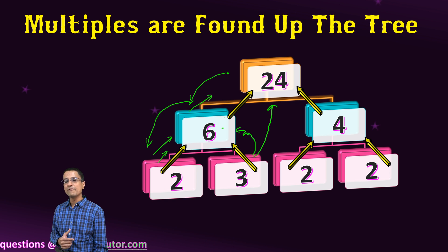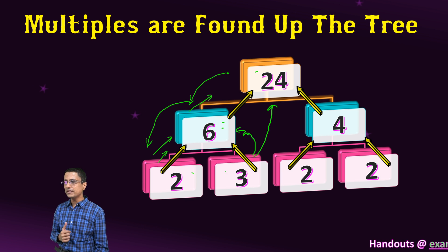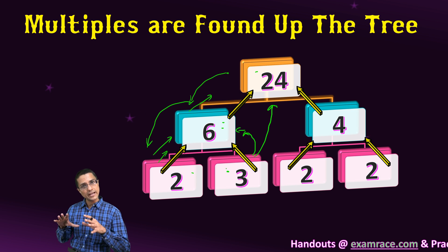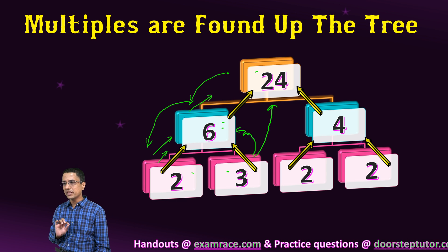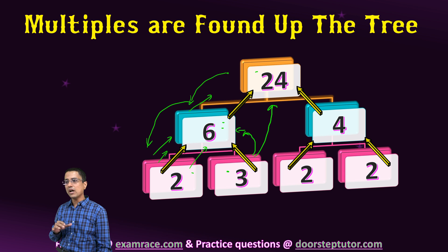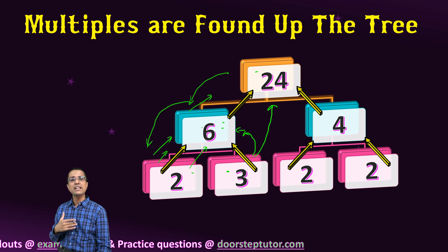So if we go up, we will find multiples. So not only 6, but also 24 would be a multiple of this 2 and 3. Again, not all the multiples of 2 would be found in this tree. But if the number is found above a number in the factor tree, it would be a multiple.